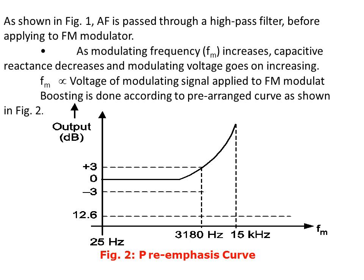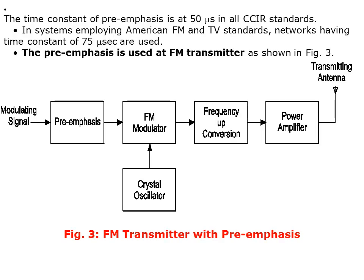The artificial boosting of higher audio modulating frequencies in accordance with a pre-arranged response curve is called pre-emphasis. The pre-emphasis circuit is actually a high pass filter. The audio frequency (AF) signal is passed through a high pass filter before applying to the FM modulator. As modulating frequency increases, capacitive reactance decreases and modulating voltage goes on increasing. FM deviation is directly proportional to the voltage of the modulating signal. The time constant of pre-emphasis is 50 microseconds in all CCIR standards, and 75 microseconds in American FM and TV standards.